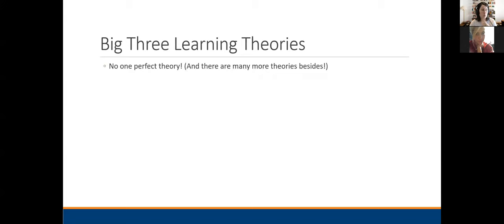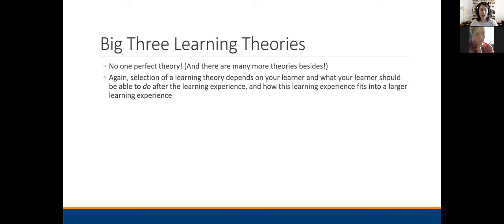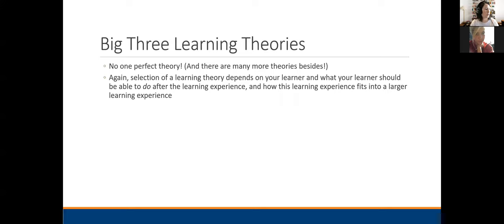Just to recap: there's no one perfect theory, and there are many more theories besides these three. Theory selection will depend on your learner and what they should be able to do. The subject is going to matter, the level of learning they need to master is going to matter. Behaviorism might be a great place to start layering your learning — making sure people have the definitions they need to understand larger, more complex concepts later on.